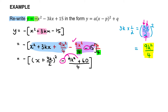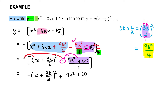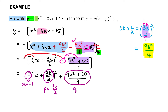The negative sign in front is very tricky when combining from two terms into one — we have to compensate for that negative being in front. Once that's done, we distribute the negative back into the bracket and get −(x + 3k/2)² + (9k² + 60)/4. So in this case a = −1, p = −3k/2, and q = (9k² + 60)/4, and we have successfully rewritten the function in the required form.